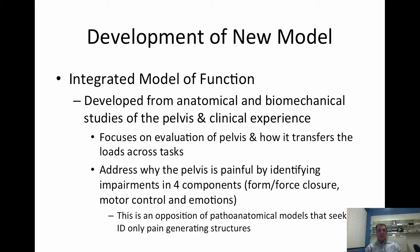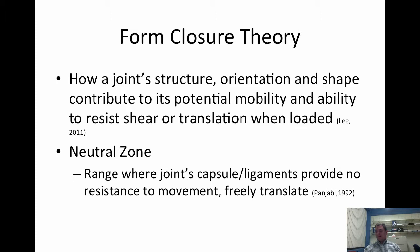If my knee hurts I go to my knee and palpate it — that is the pathoanatomical approach. This is not what the integrated model of function is trying to show you. This model tries to classify you within one of the four different components by identifying impairments. I think it's a good model and it makes sense for what we see and do here in the DAT.